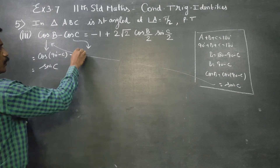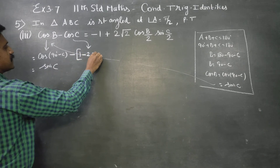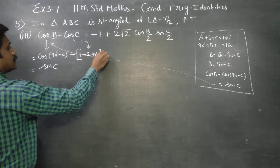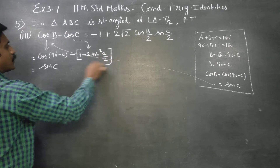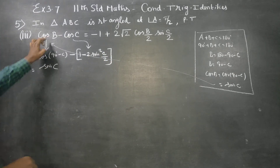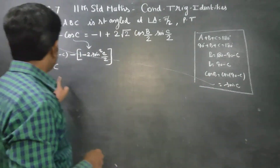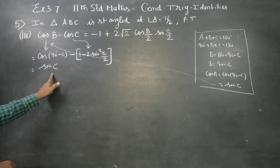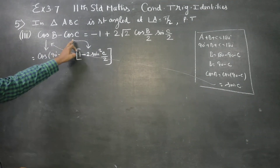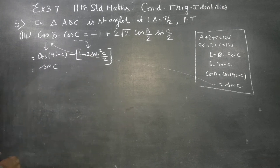1 minus 2 sin squared(c/2). cos b is equal to 1 minus 2 sin squared(c/2). cos c is equal to the answer using the submultiple angle formula.